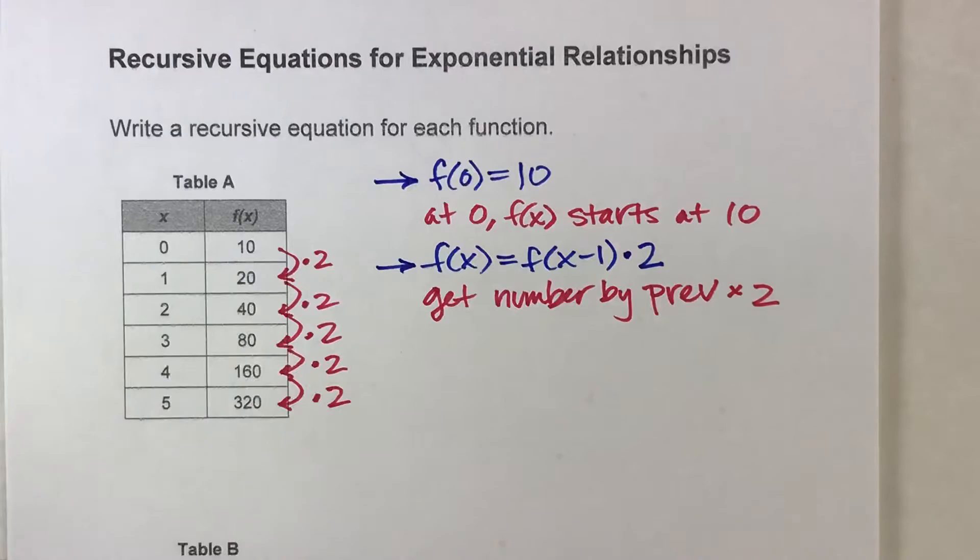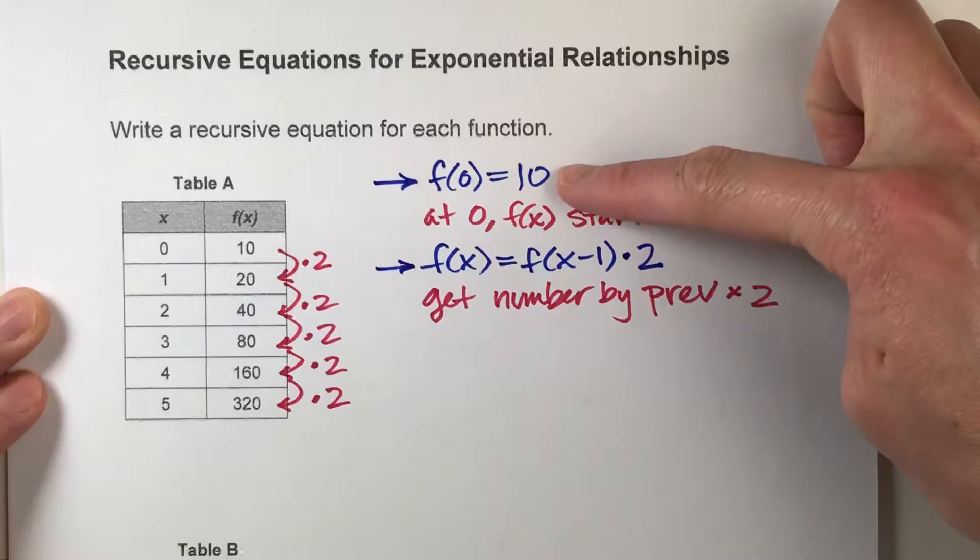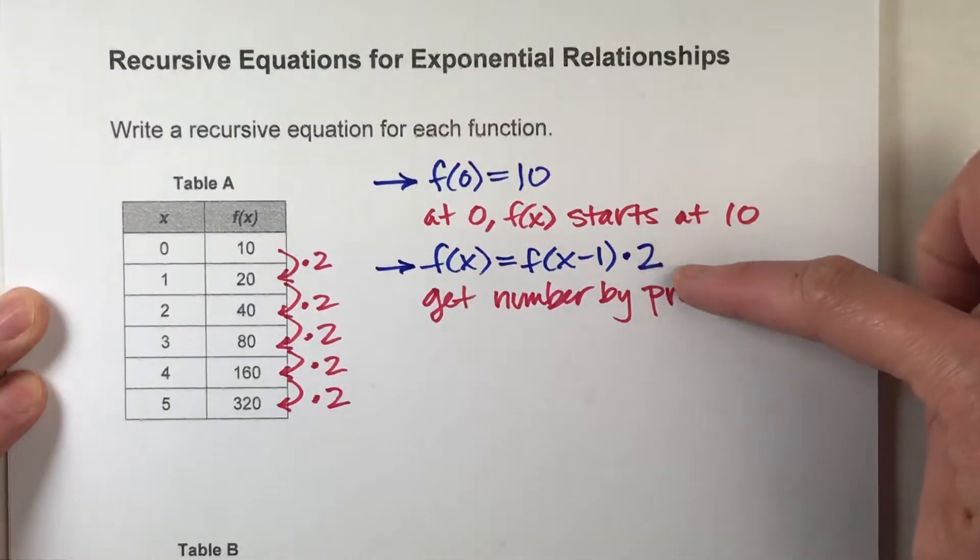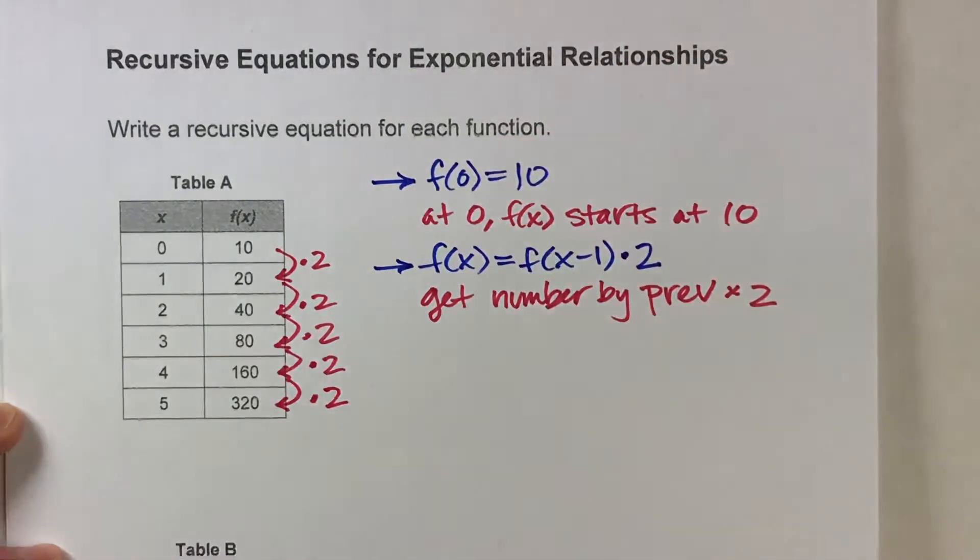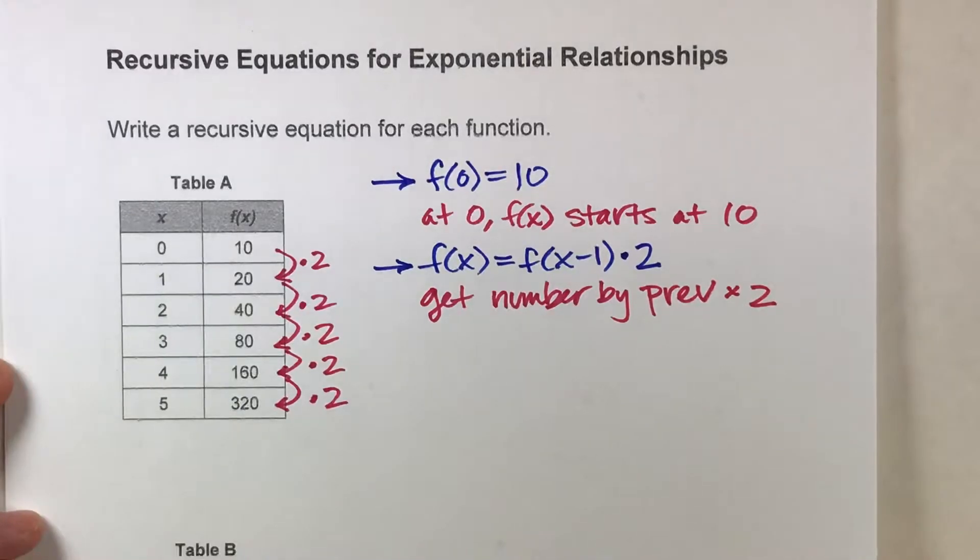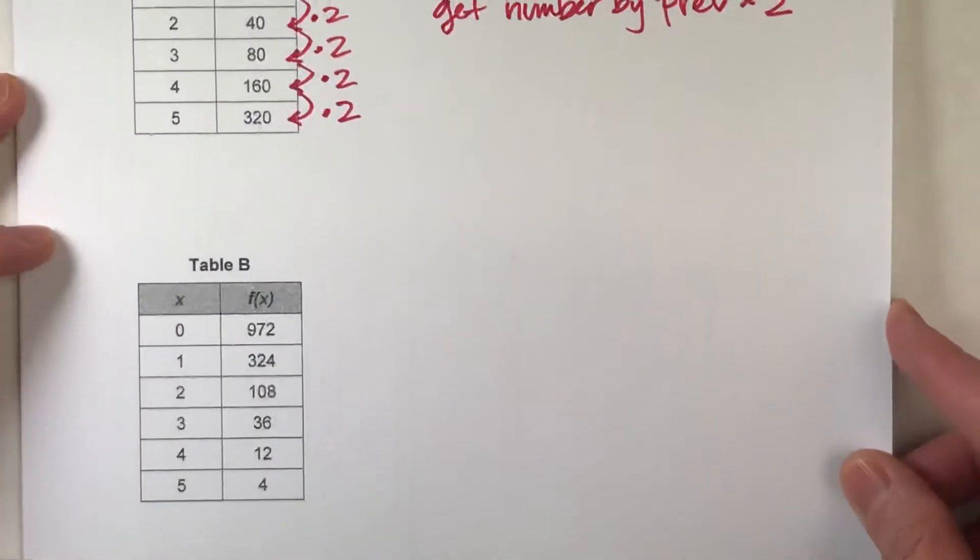So your recursive equation is made up of two parts. We have to state where does the table begin and what is the pattern of the table. Let's do another example so you can see it. And this time, I'm not going to write out the written explanation of what the pattern is. We'll just go straight to the recursive equation.